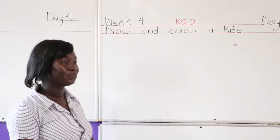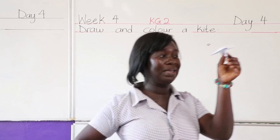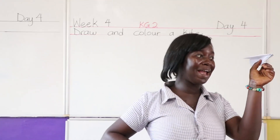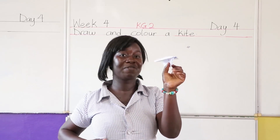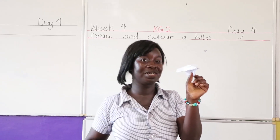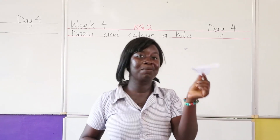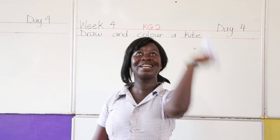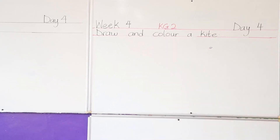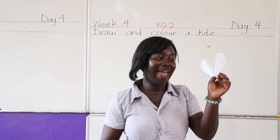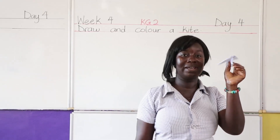Now this afternoon, as you can see, I have with me a paper aeroplane. I used a sheet of paper, an A4 sheet, in making this aeroplane. The moment I throw it, the air blows and takes it away. So I'm making good use of air. Air has taken place.